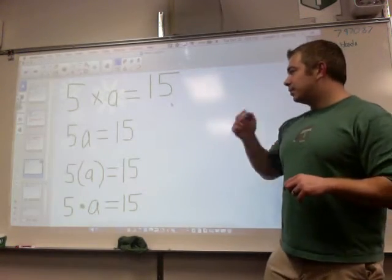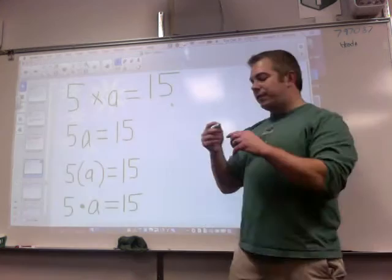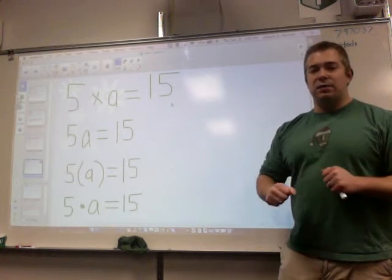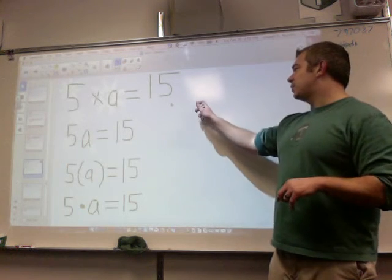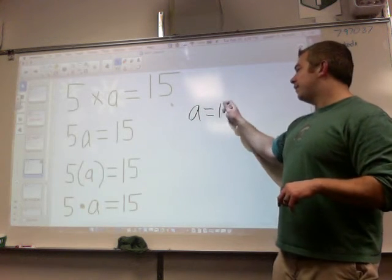What is a equal in this situation? 5 times something equals 15. So let's count by 5s: 5, 10, 15. So 5 times 3 equals 15. In this situation, a equals 15. Nothing too hard yet.